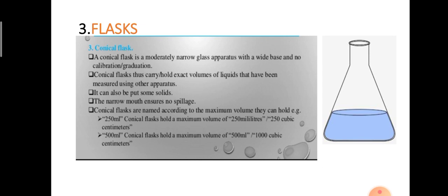A conical flask is a moderately narrow glass apparatus with a wide base — look at the base size, it is a wide base and not graduated. This means we can use this conical flask for storage of various chemicals and for mixing different solutions together.